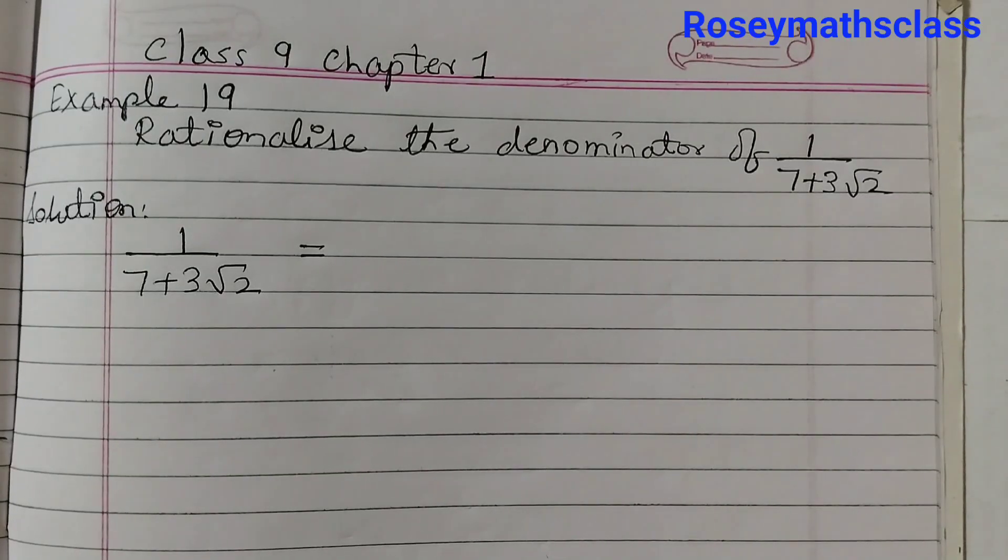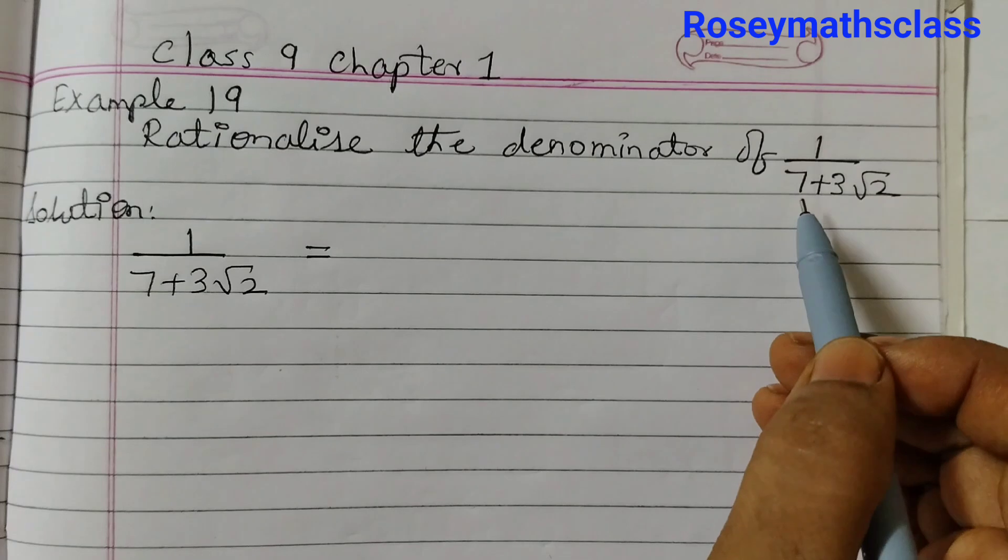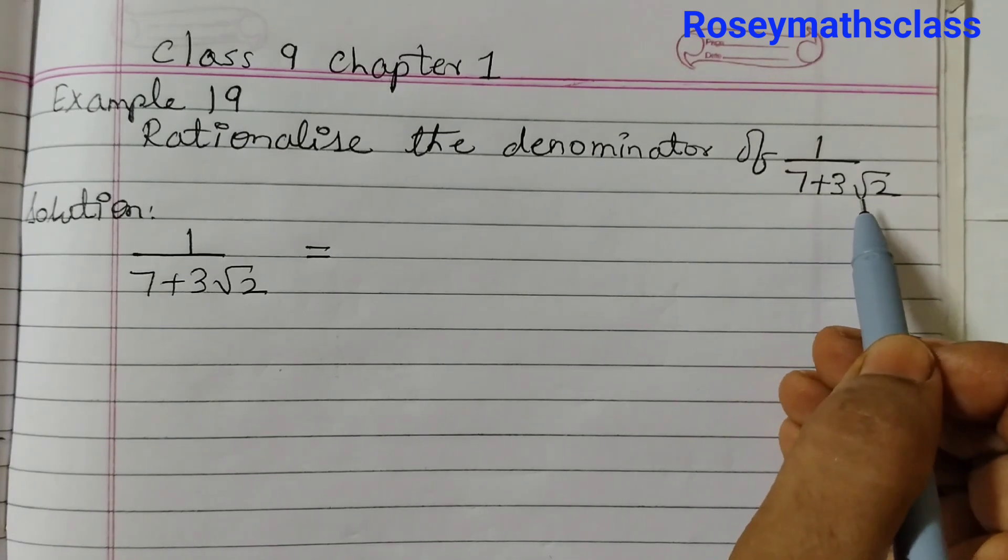Hello students, in this video we shall learn how to rationalize the denominator of 1 by 7 plus 3 square root of 2.